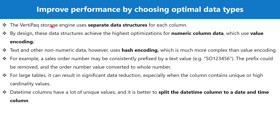The best performance for the VertiPaq storage engine is for numeric data columns. All columns in your data model with a numeric data type — such as whole number or decimal number — use a special kind of encoding called value encoding, which has the highest optimization. If you are using text or other non-numeric data, the encoding used by the VertiPaq engine is called hash encoding, which is much more complex than value encoding.